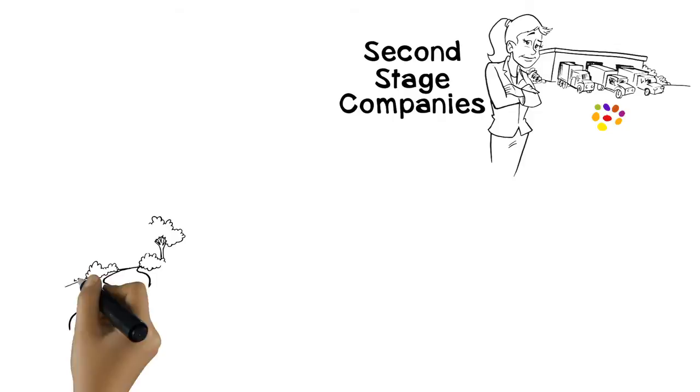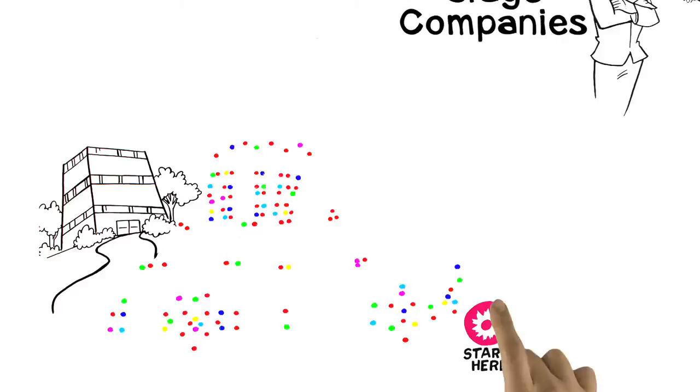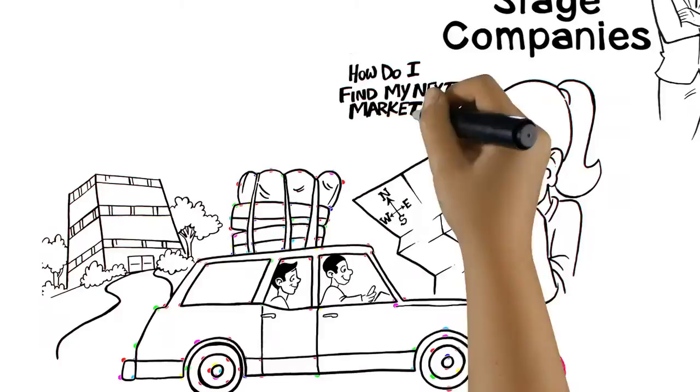Then we have what we call our second-stage companies. Second-stage companies are established companies, have maybe 10 to 99 employees, and they've got owners who are just raring to take this company to the next level. Which is really, how do I find my next market?